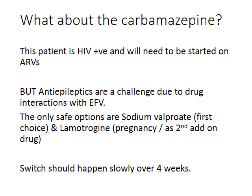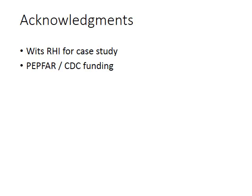The switch from carbamazepine or phenytoin must happen very slowly over four weeks. Generally, if you diagnose someone with HIV who is already on carbamazepine or phenytoin, you need to make it a priority to slowly complete that switch so the patient is already on an appropriate drug by the time you start ARVs. Thank you very much — a short and sweet case. Thank you to WITS RHI for this great case study and to our funders. Do see our next eLearning module on a case study regarding liver injury and TB drugs.